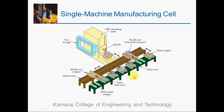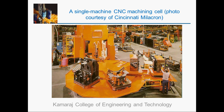Here is an illustrative example of a single machine cell: there is only one CNC machine automated by a conveyor-type material handling system and controlled by a computer control system. A photograph of a CNC single machine cell is shown.